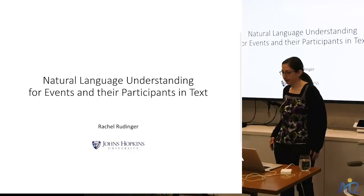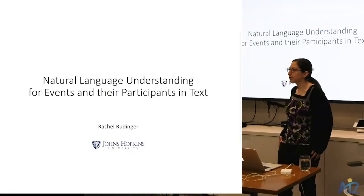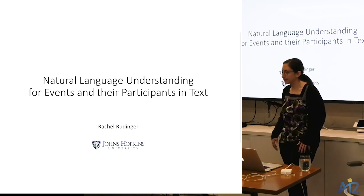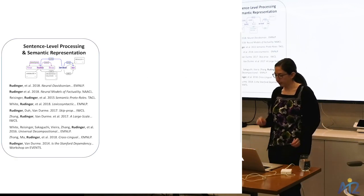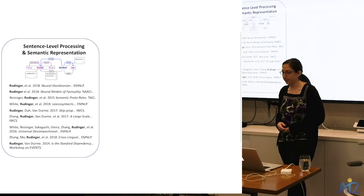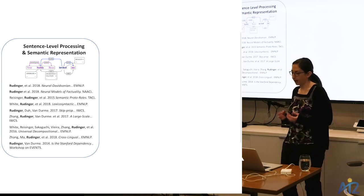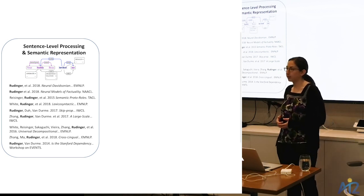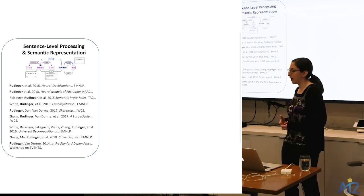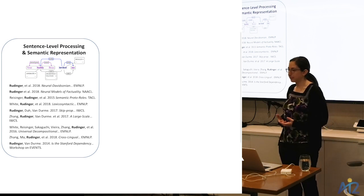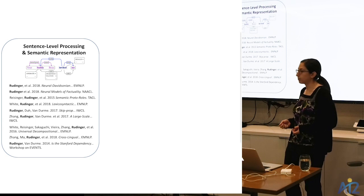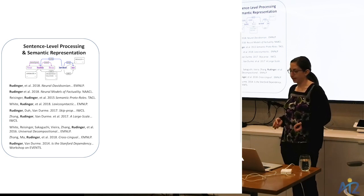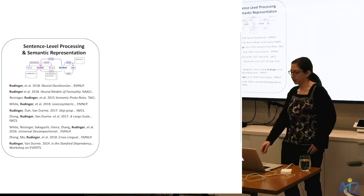Today I'm going to talk about my work on natural language understanding for events and participants in text. The bigger picture of my research focuses on three main areas. First, I work on developing systems that map sentences to representations of their meaning, in particular to support downstream inferences about events and participants mentioned in text.